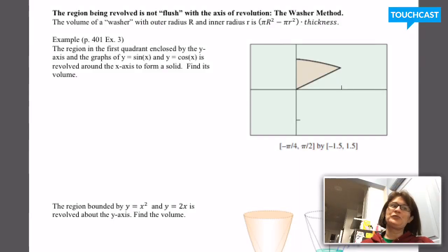Here's the last sort of situation we're going to have to learn to deal with. What if we take a region and revolve it around an axis, but that region is not flush with the axis of symmetry?